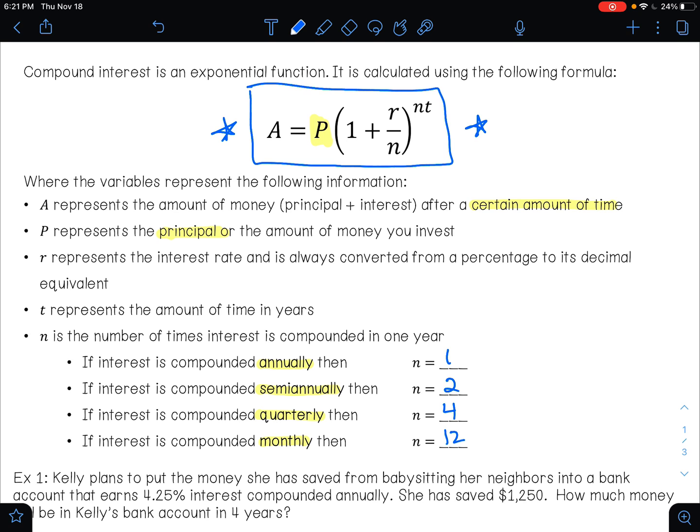Like I said earlier, you will always be given this formula, but you do need to memorize these because they will not tell you. They'll tell you annually, semi-annually, quarterly, monthly, but they won't say one, two, four, or 12 times. So you do need to memorize that part of it.